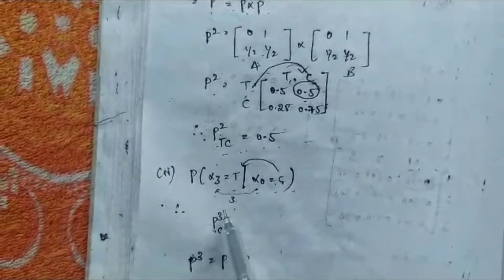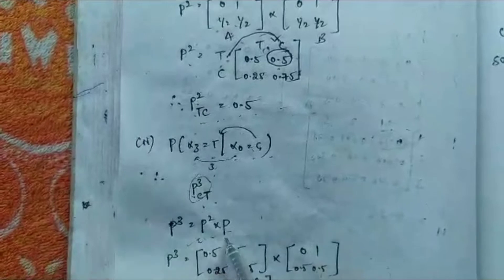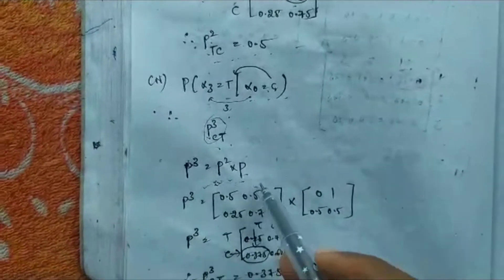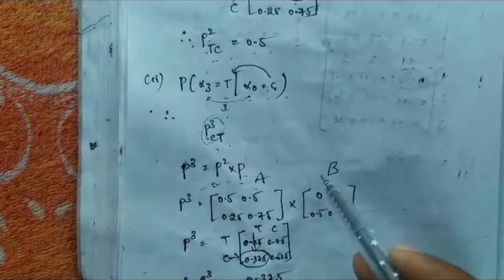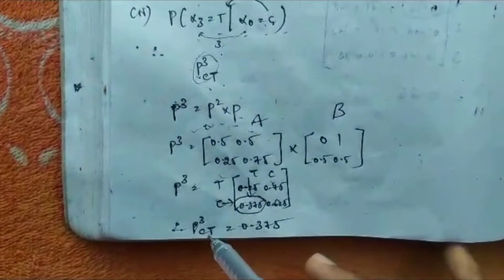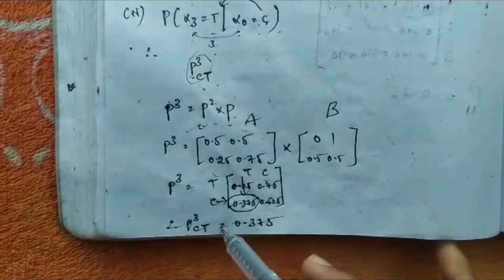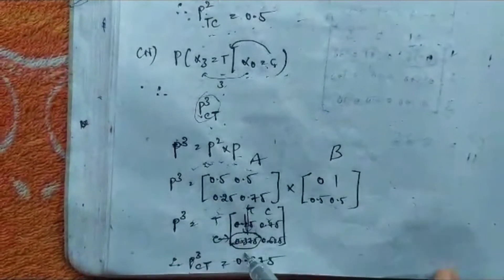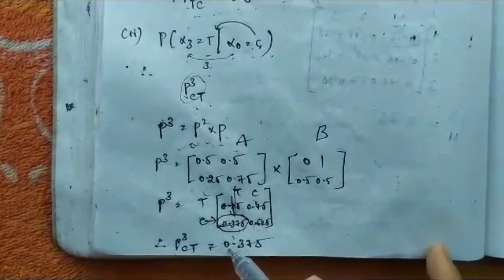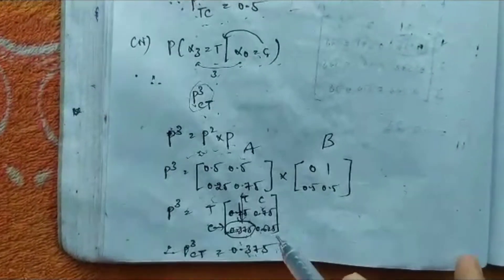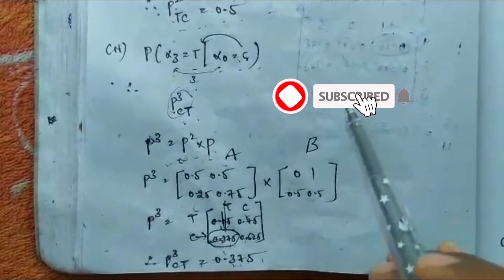For P(X3=Train | X0=Car): the difference between periods X0 and X3 is 3, so we take P cubed, moving from Car to Train. P cubed = P squared × P. Taking P squared as matrix A and P as matrix B, we compute in the calculator and get the P cubed matrix. The value from Car to Train is 0.375. Therefore P³(Car→Train) = 0.375. Hope you love this video — please keep supporting me and like, share, comment, subscribe, and click the bell icon.